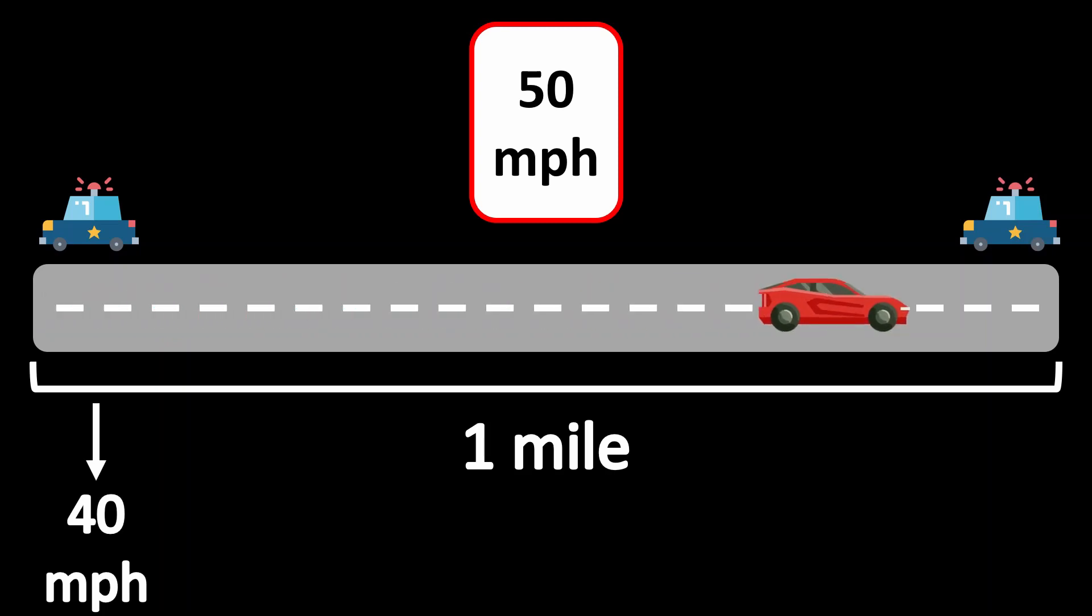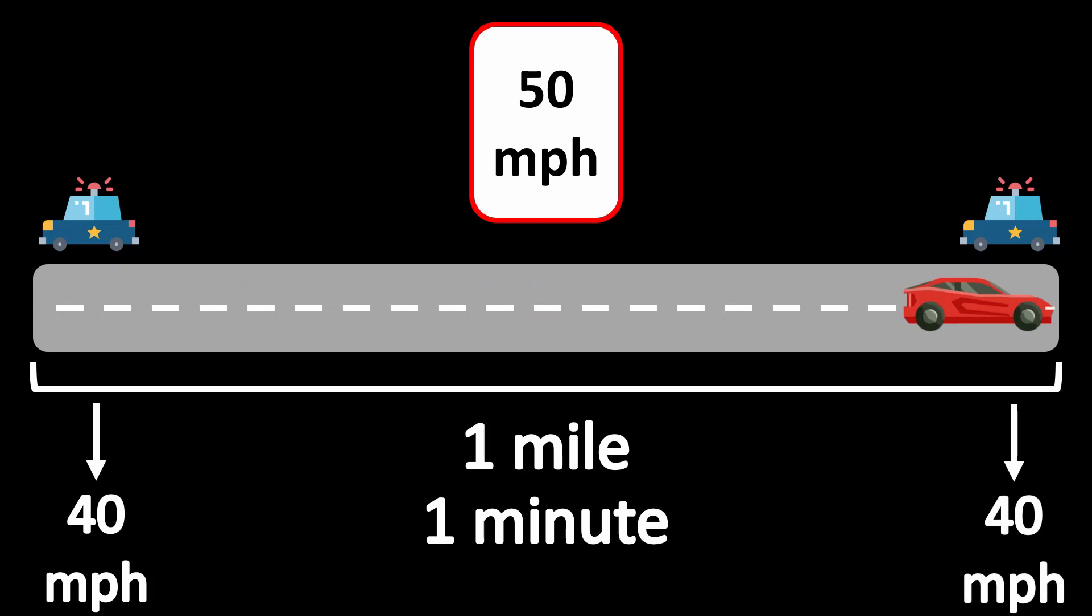Then one minute later, the cop at the end of the stretch uses his radar gun and measures you exiting the stretch again going at 40 miles per hour, which is again under the speed limit.